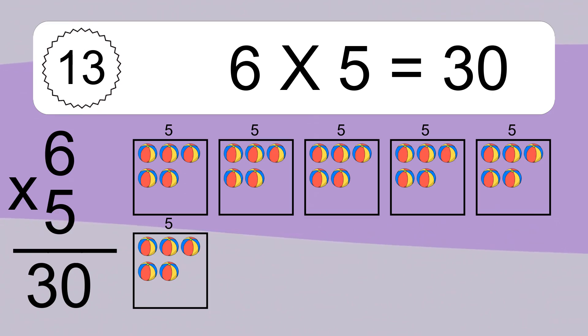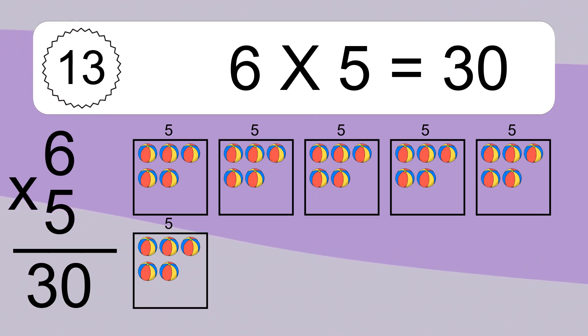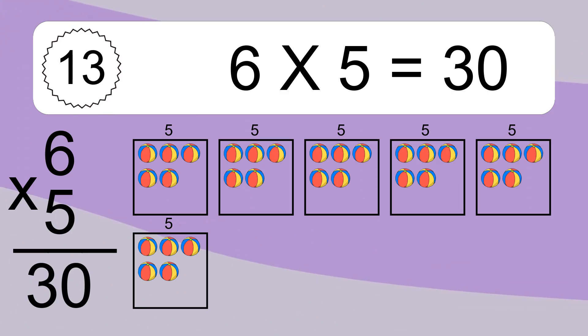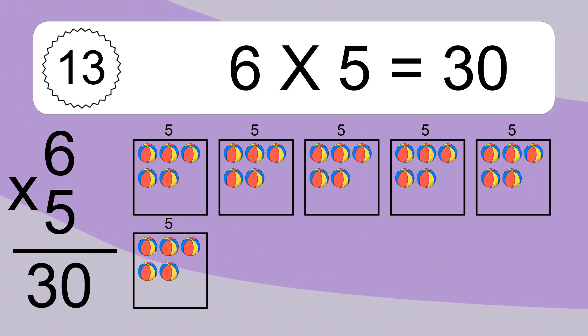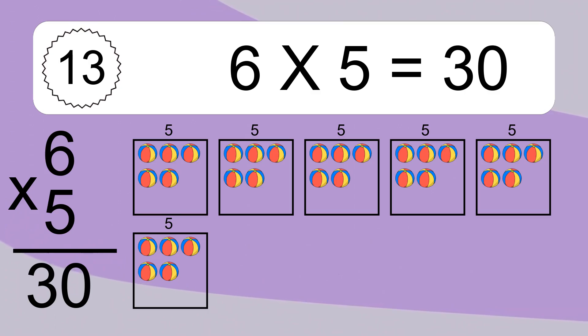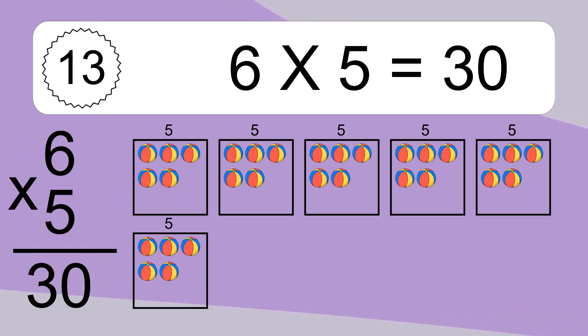We have 6 boxes, and each box has 5 colorful balls inside. If you count all the balls in all the boxes together, you will have 6 times 5 balls. This equals 30 balls.